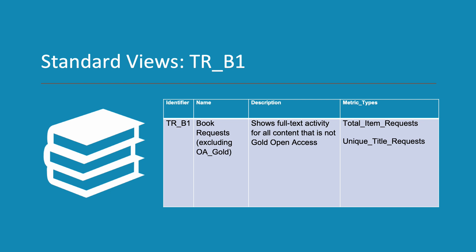TR B1 uses just two of the Counter metric types – Total Item Requests and Unique Title Requests. In both cases, this means that a user has viewed or downloaded a full-text content item in the context of a book. That means TR B1 is focused on full-text views and downloads of book content.